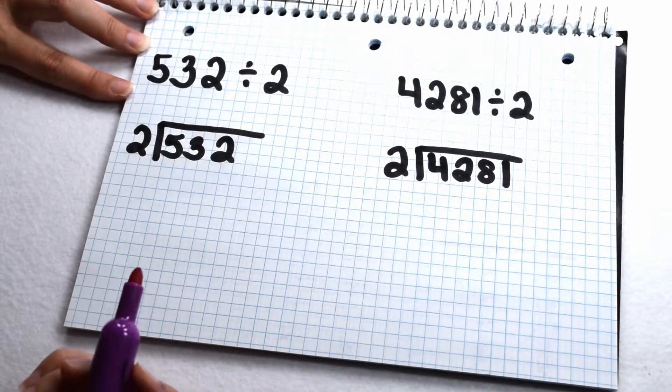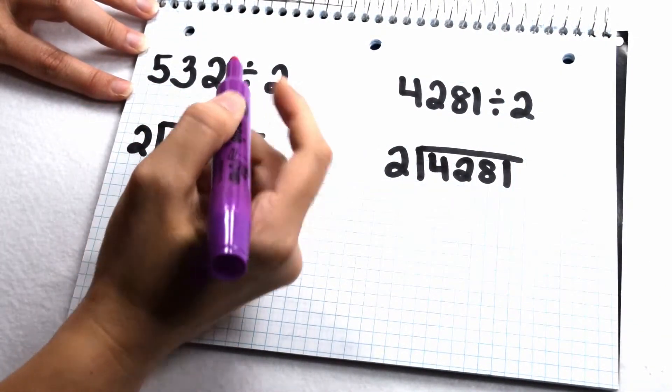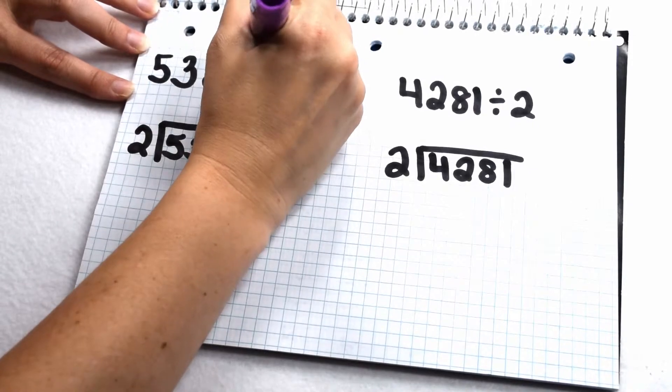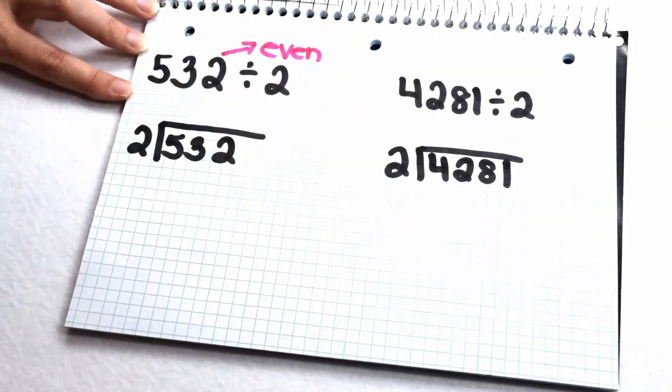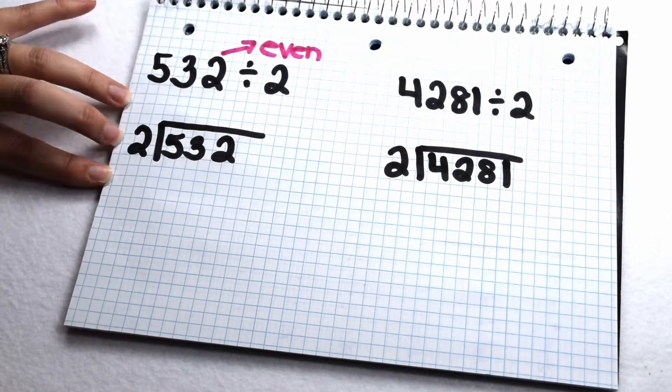We can also test this rule to see if larger numbers are divisible by 2. Here we have 532 divided by 2. 532 ends in 2. 2 is an even value. That means I should be able to divide 532 by 2 and not have any remainders.